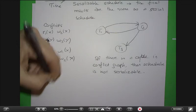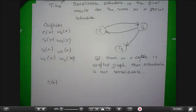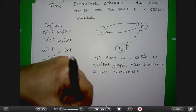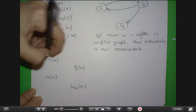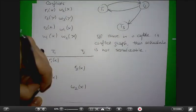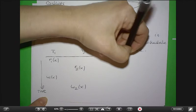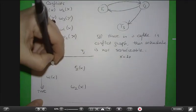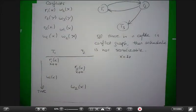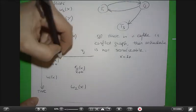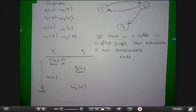Think about what's happening: you have read-1 of X, then read-2 of X, then write-1 of X, then write-2 of X. Let's say in the beginning X is equal to 10, and all these transactions are doing is just incrementing X. So transaction 1 reads X, sees it as 10, and makes it 11. But before it writes, transaction 2 also reads and sees that it is 10, and increments it to 11.